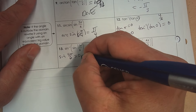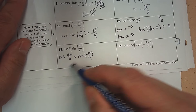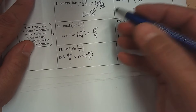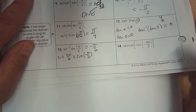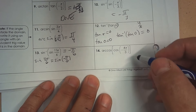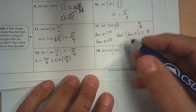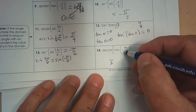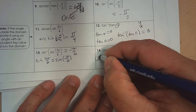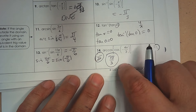Number 13: 11 pi over 6 is not in the domain restriction for arc sine. Sine of 11 pi over 6 is the same as sine of negative pi over 6 — they're the same point on the unit circle, just going clockwise versus counterclockwise. So substitute negative pi over 6 and the answer is negative pi over 6. Number 14: negative 4 pi over 3 is coterminal — the reference angle is pi over 3, it's negative, we're in quadrant 2, and the equivalent angle in the domain is 2 pi over 3.